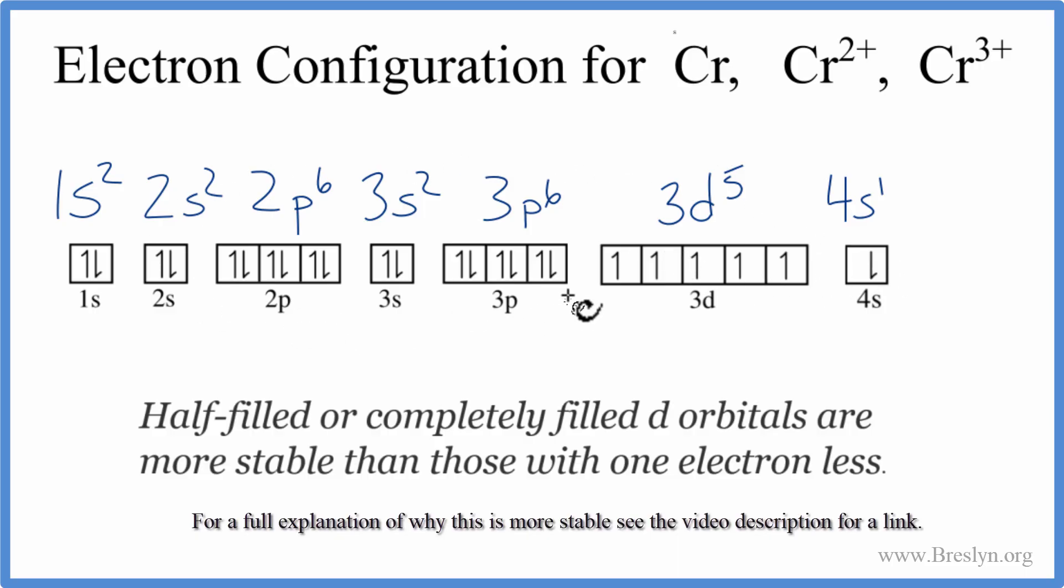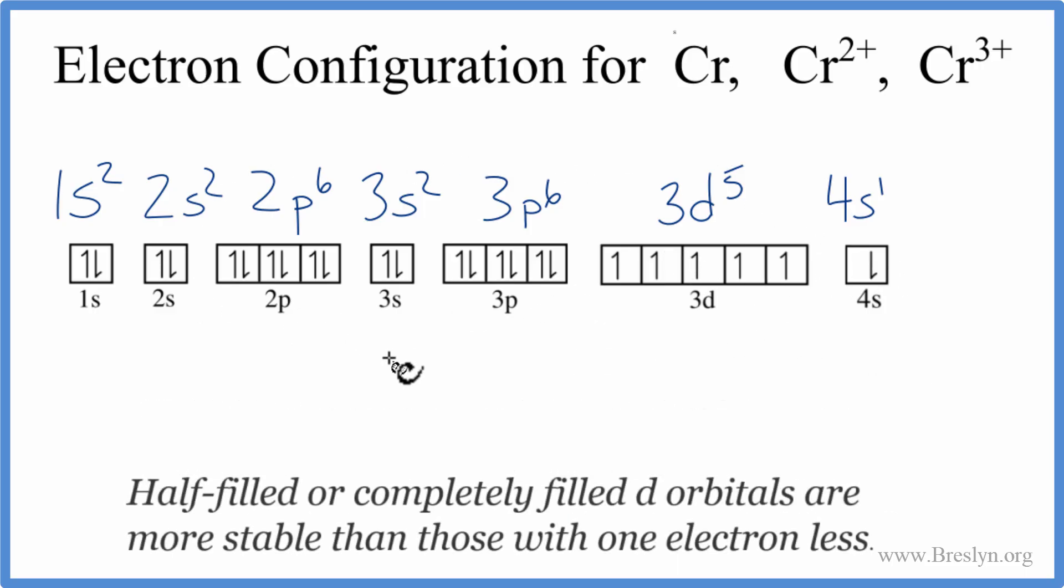We can also write this in a condensed notation. We'd write the noble gas argon, put it in brackets, and then we do 3d5, 4s1. So this is Cr, chromium.